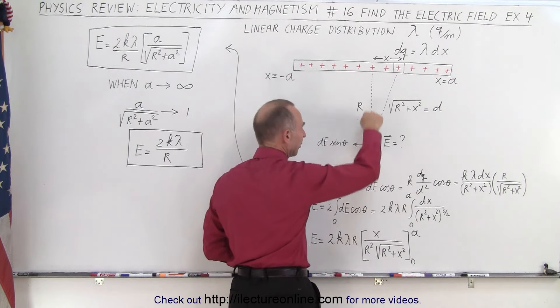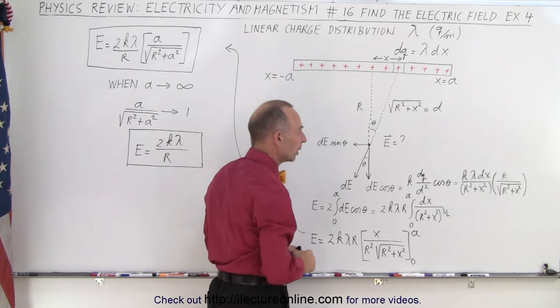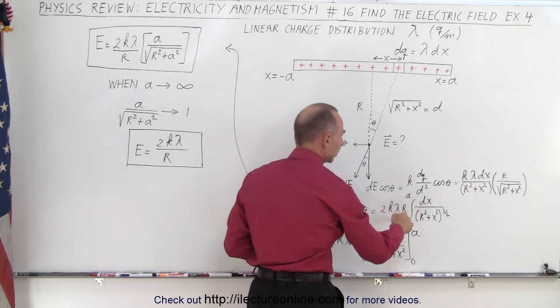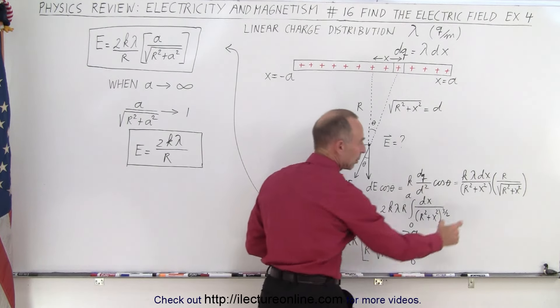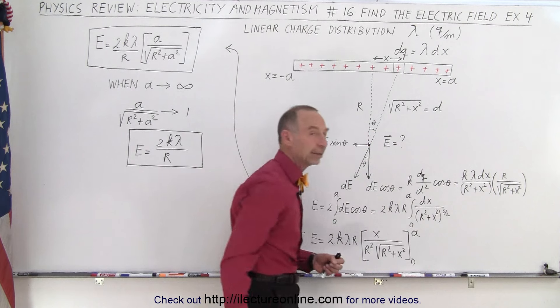The whole thing left is that we end up with the integral of dx over r squared plus x squared to the three halves power when we multiply this times this in the denominator.